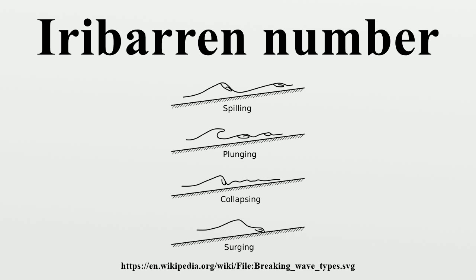For example, for periodic waves the wave height H0 at deep water, or the breaking wave height Hb at the edge of the surf zone. Or, for random waves, the significant wave height H at a certain location.